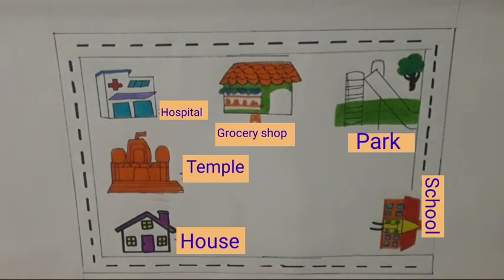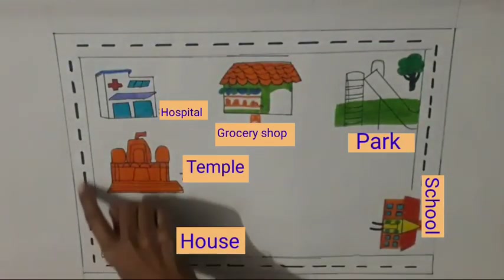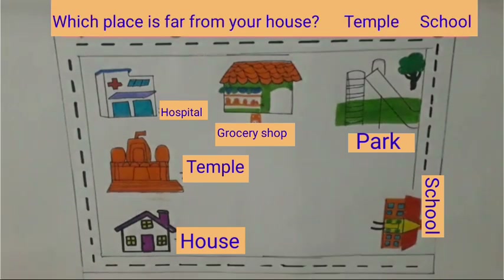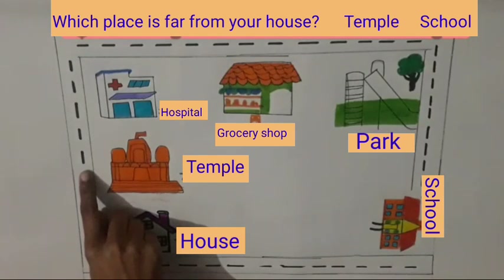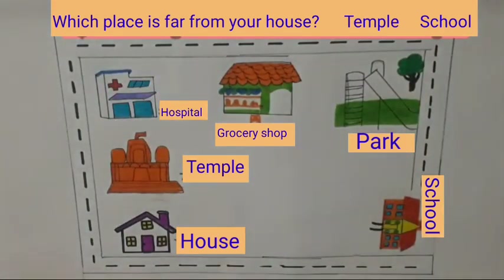You are seeing there are house, temple, hospital, grocery shop, park and school. And there are ways. Through this way, we can reach school, temple, and hospital from the house. Now tell me kids, which place is far from your house — temple or school? This is the way to temple from the house, and there are two ways to school. The first way is longer and the second way is shorter. So, the school is far from your house.